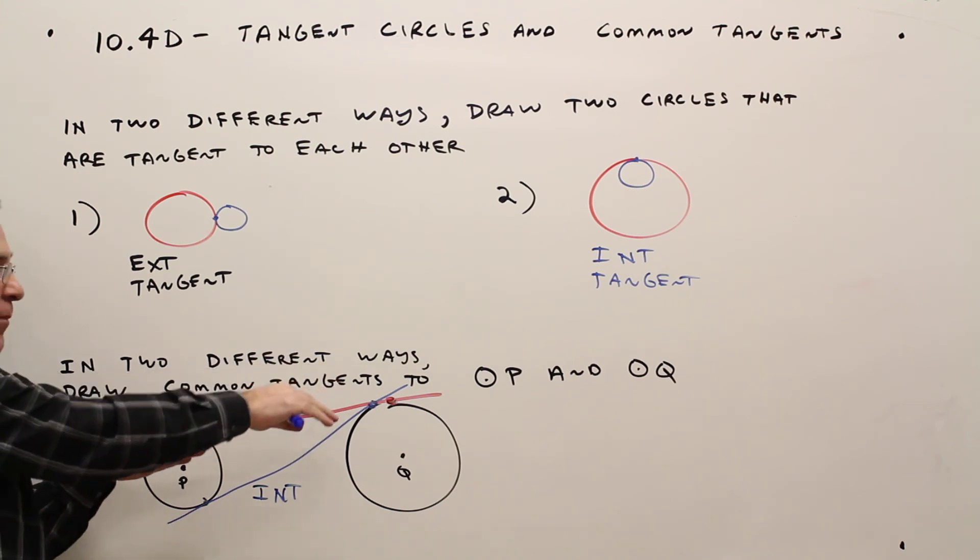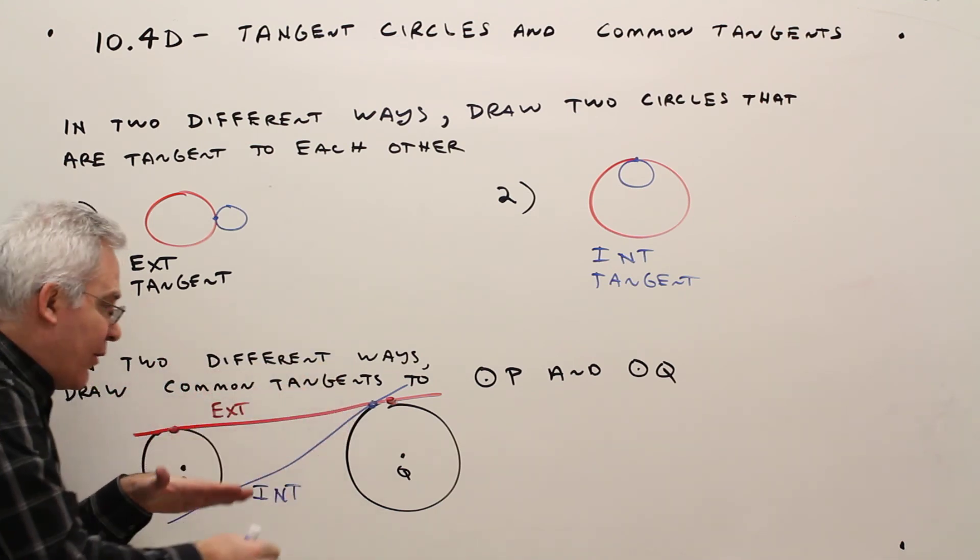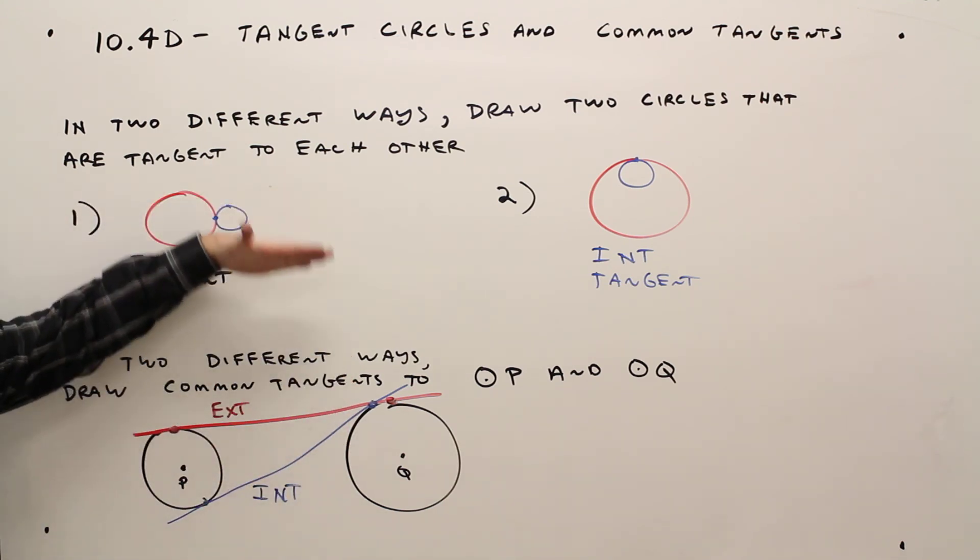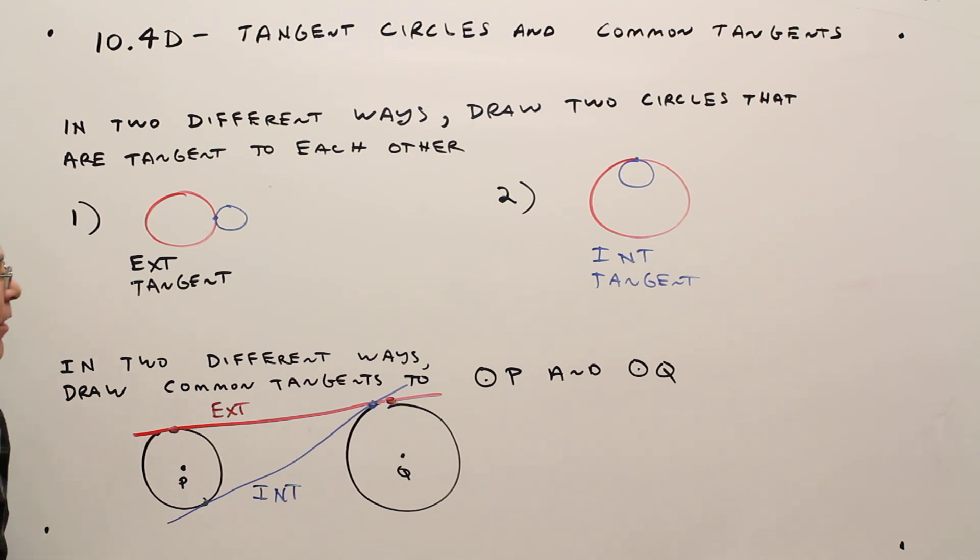Okay, internal kind of going in between the circles, external always being on the outside of circles. So there you have it, just a few more vocabulary words to help us with future problems.